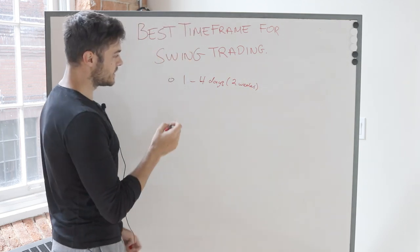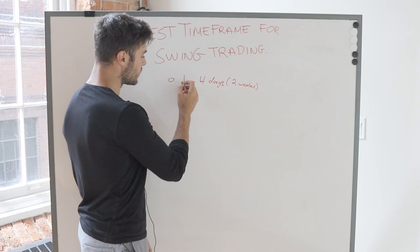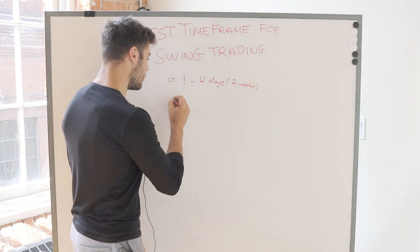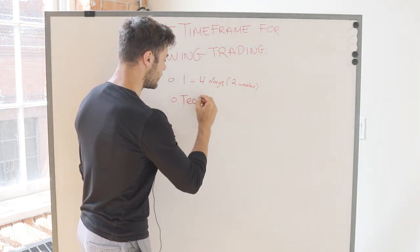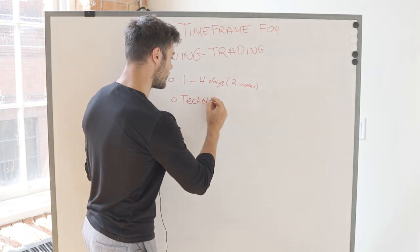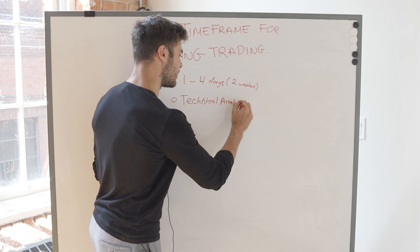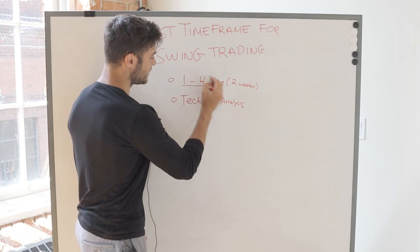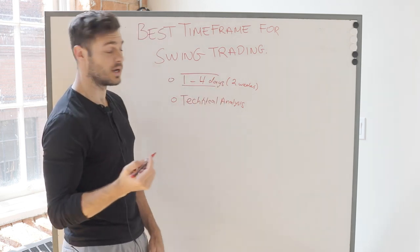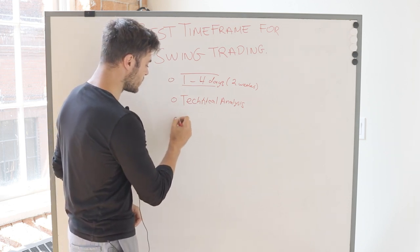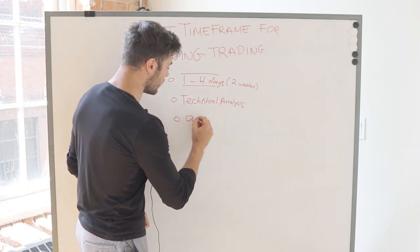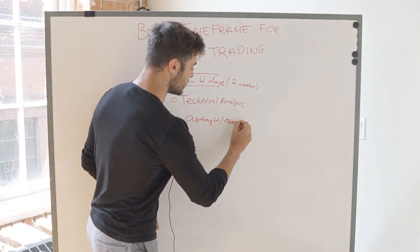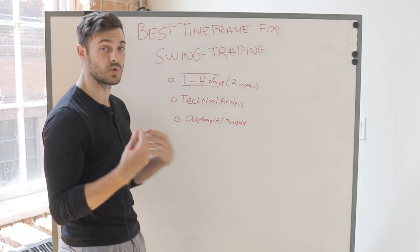Because a swing trader is looking to hold a position between one to four days up to two weeks, most swing traders are technically focused — their trading strategy is based on technical analysis. The reason for this is because the duration of the trades they're looking to take are generally on the shorter front. So what swing traders will often do is look for overbought or oversold conditions within a trending market and capitalize on the extreme reaction from the market.